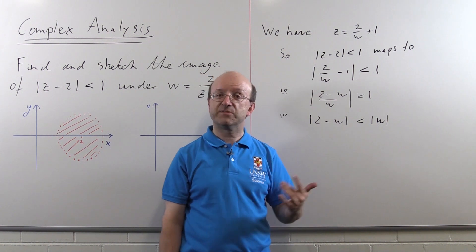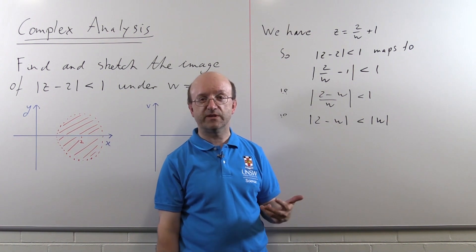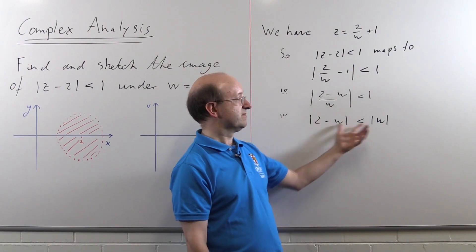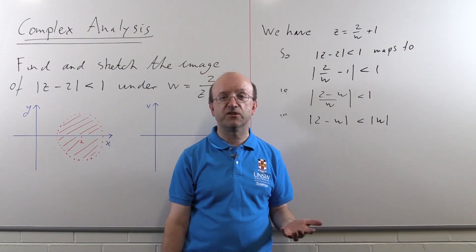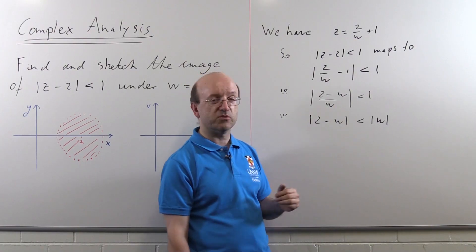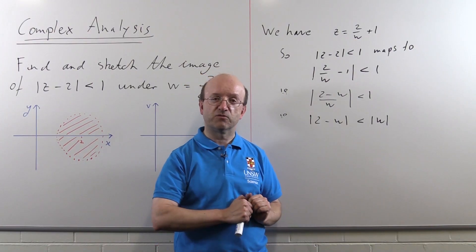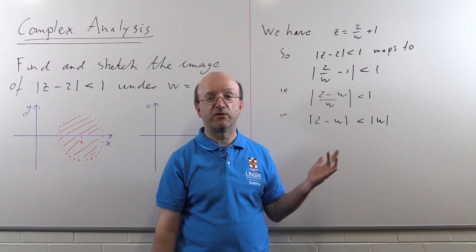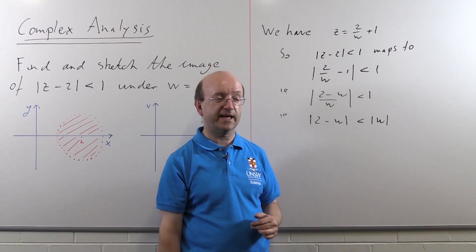Well, this is all points that are the same distance from 2 and from 0 is the line that bisects 0 and 2. In other words, it's the vertical line through u equals 1. And since we're to be closer to 2, we must have, in fact, the right-hand half plane. So we're going to get u strictly bigger than 1 at the end. And that would be a perfectly reasonable argument to give.